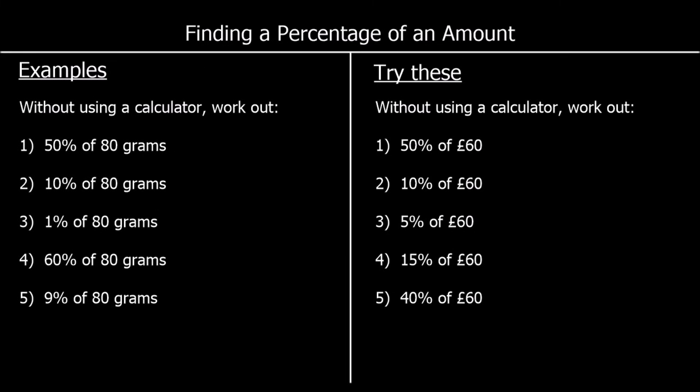Here we've got a different set of questions. Again, without using a calculator, we're going to work out percentages of an amount. The first question: 50% of 80 grams. To find 50%, we divide by 2 — it's the same as a half. So half of 80 is 40, so half of 80 grams is 40 grams.